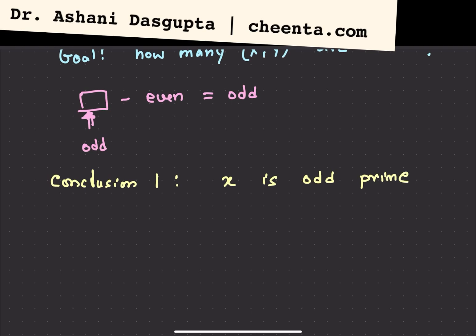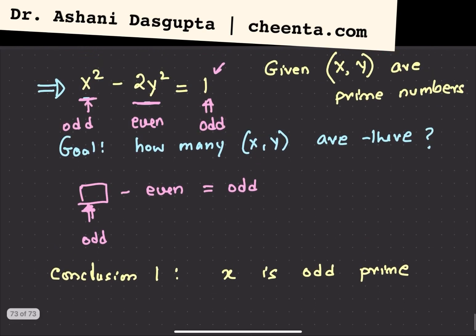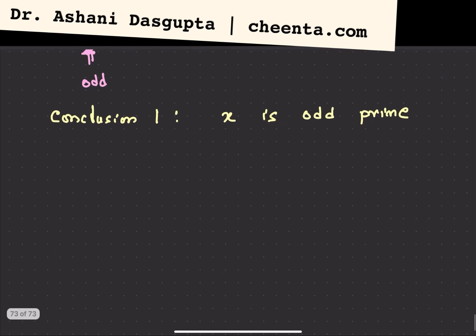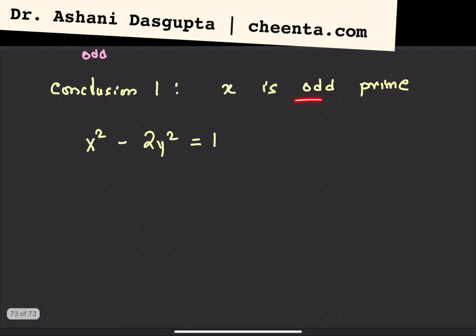Most primes are odd. The only even prime is 2. So now let's continue with our analysis. We see that x square minus 2y square equal to 1. That's given. And we also know x is an odd prime. Now let's reshuffle this equation a little bit. x square minus 1 is equal to 2y square, or we have x minus 1 times x plus 1 is 2y square. This is a very typical scenario.